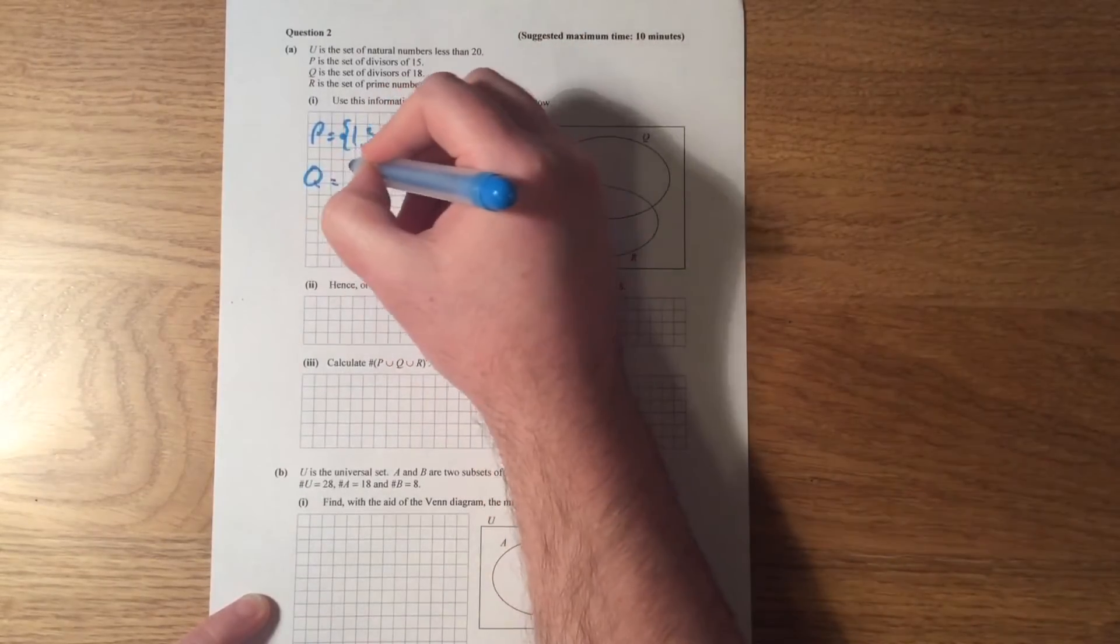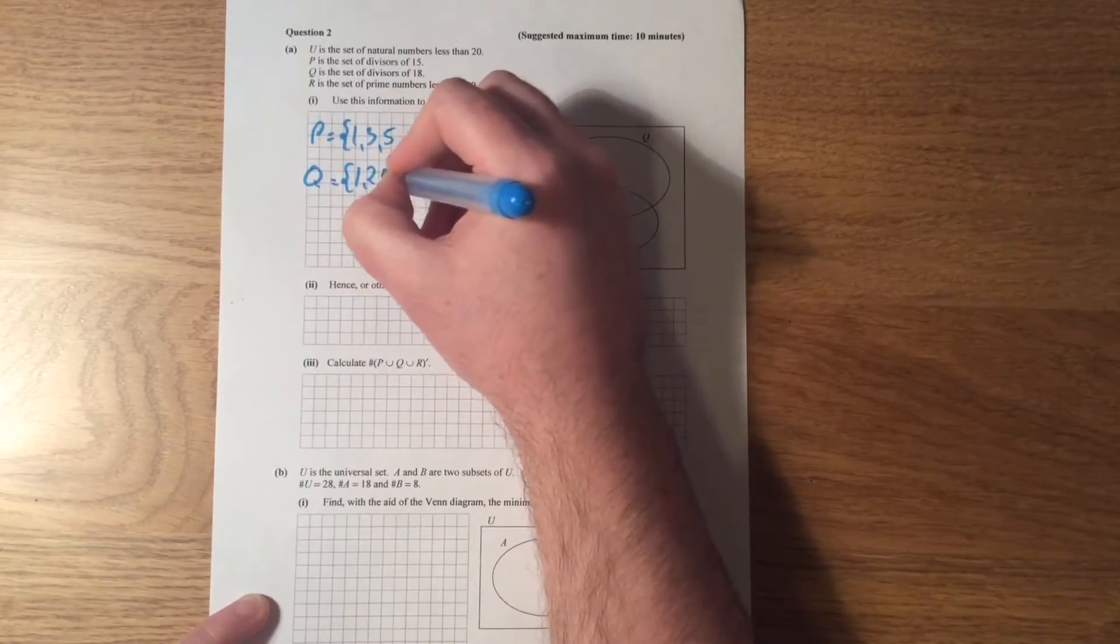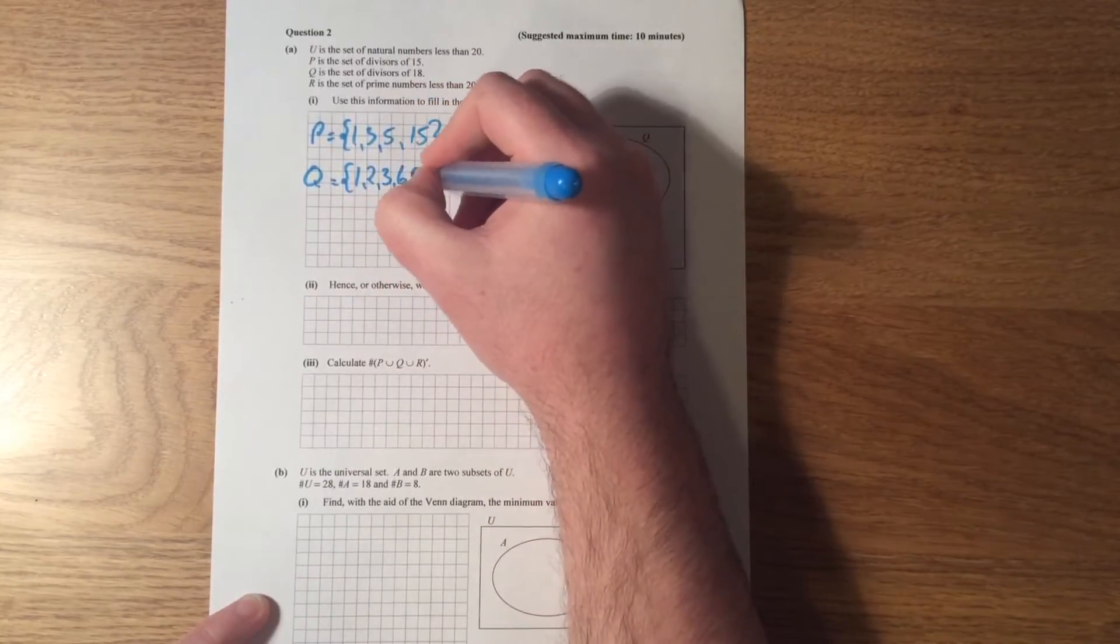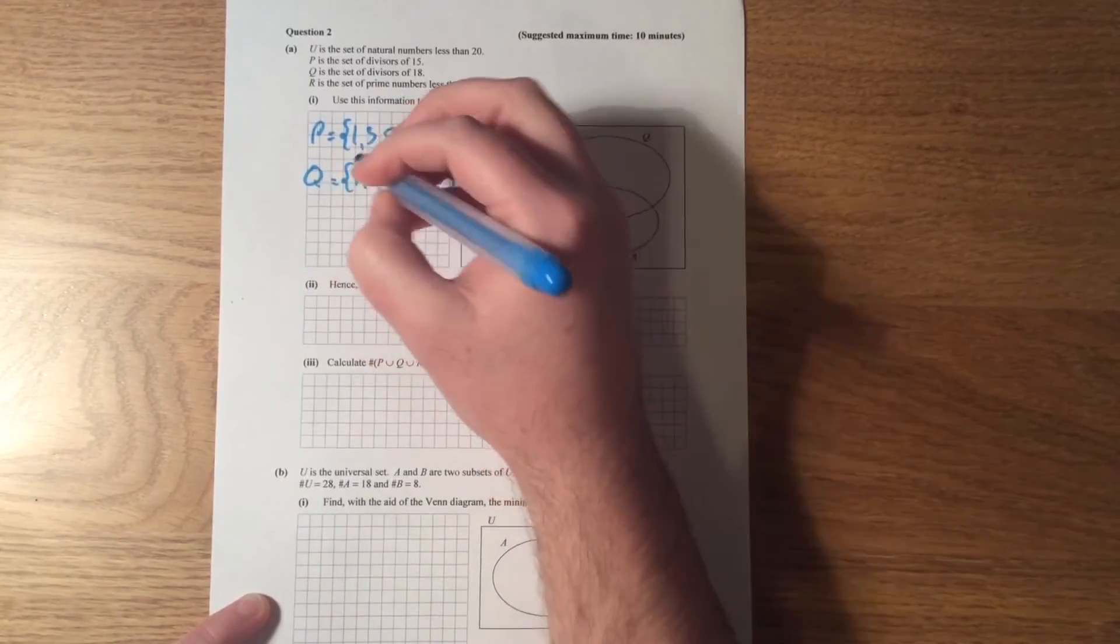Q is the set of divisors of 18. 1 divides into 18 evenly, 2 divides in evenly, 3 divides in evenly, 6 divides in evenly, 9 divides in evenly, and 18 divides in evenly.